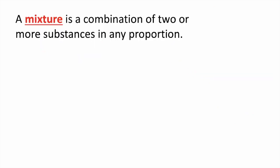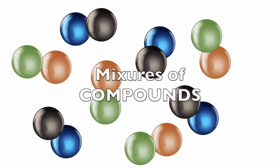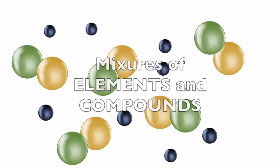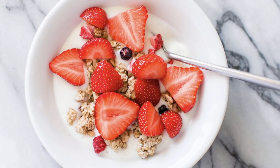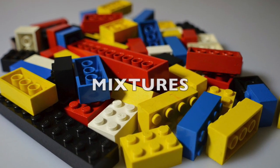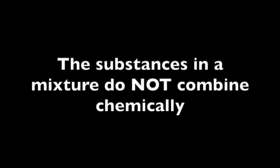A mixture is a combination of two or more substances in any proportion. You can have mixtures of elements, or mixtures of compounds, or mixtures of elements and compounds. We can also have mixtures of larger things — the cereal and milk you eat every day for breakfast, or chicken soup, or those multicolored Legos — those are all mixtures. What's important about mixtures is that the substances in a mixture do not combine chemically, and they retain their chemical and physical properties.